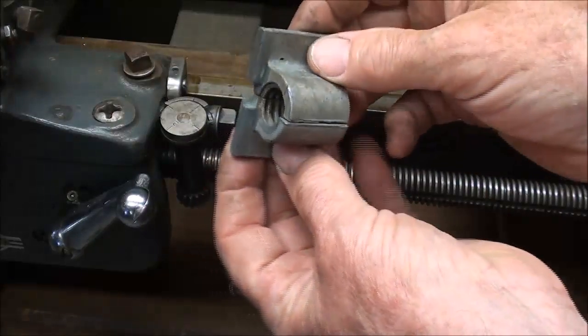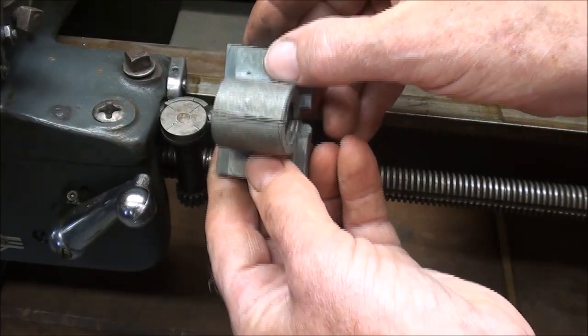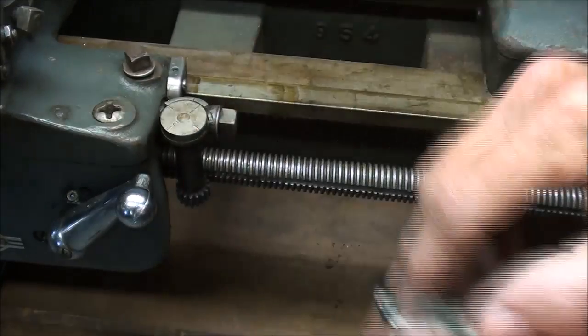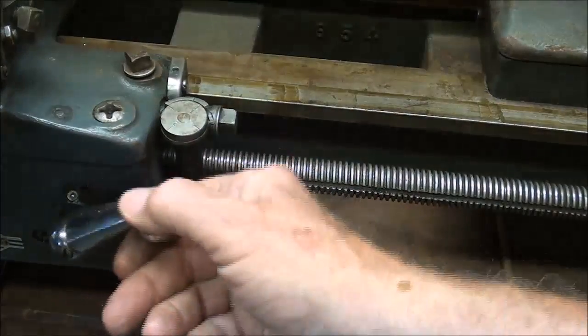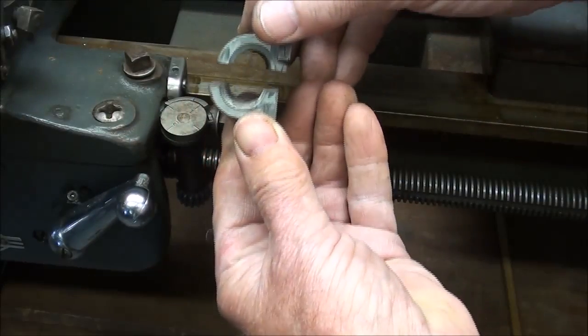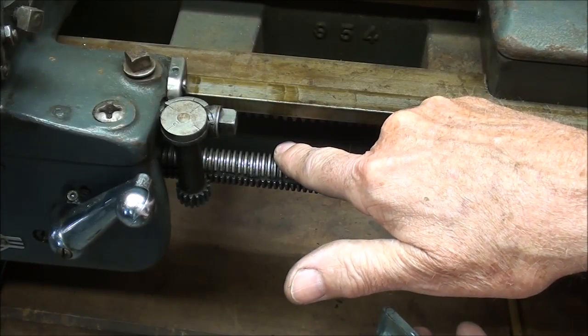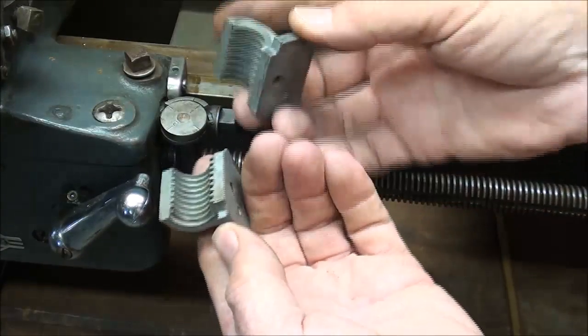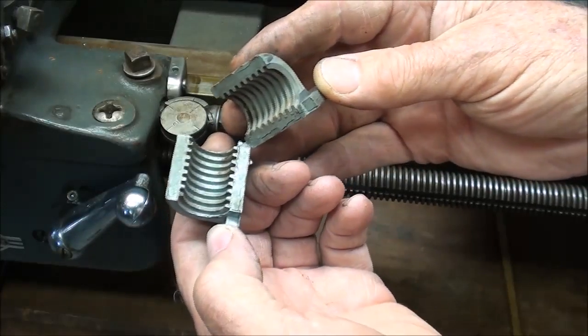This is a pair of half nuts or split nuts. When you engage the half nut lever or split nut lever like this, you are opening and closing this onto the lead screw. These also appeared to be made of Zamac and I had an extra set of these that came with this machine.